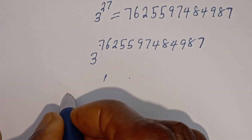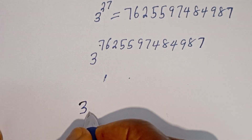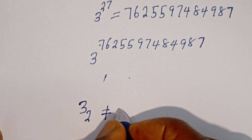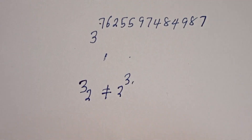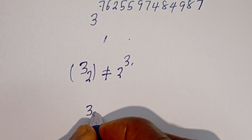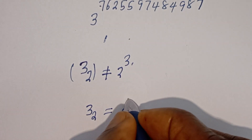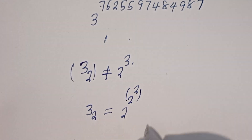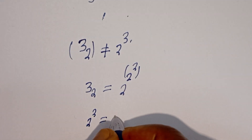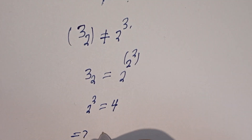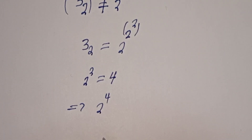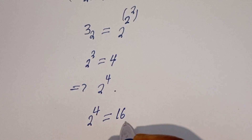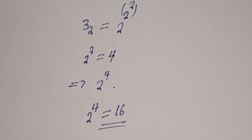Now let's check another example. Take it for instance, if you have two tetrated to three — this is not equal to two to the power of three. Two tetrated to three is equal to two to the power of two to the power of two, that is two in three places. Let's consider this: two to the power of two is equal to four. Now this is two to the power of four, and two to the power of four is equal to 16. You can see that this is more simple.